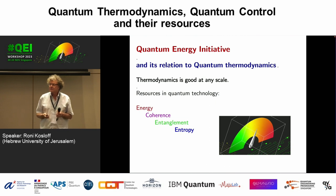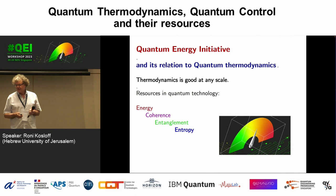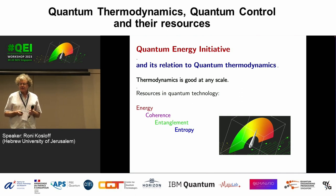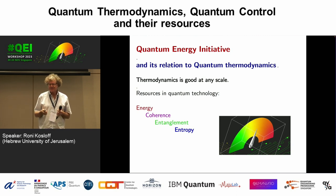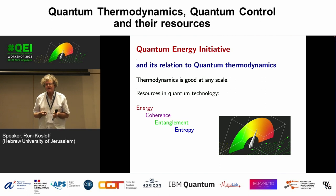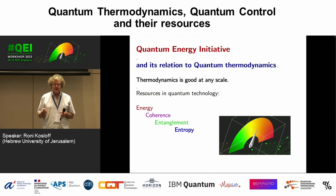A lot of things go together with thermodynamic thinking because that's the tradition of thinking about resources. The resources we typically think about are energy, coherence, entanglement, and what I'll emphasize here is entropy — which hasn't been mentioned yet — as the main consideration that unifies things, both on the information side and as a practical viewpoint.